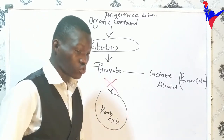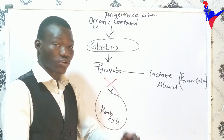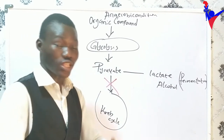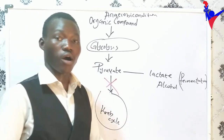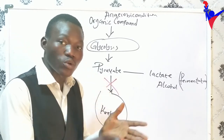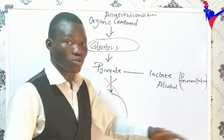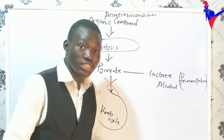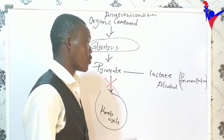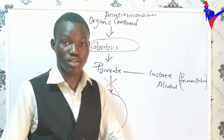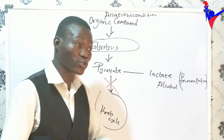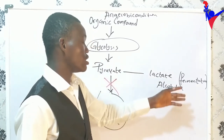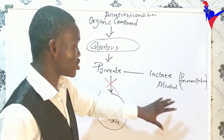For example, milk — if you leave milk without refrigerating it properly, it gets fermented and spoils. But scientists have been able to control the rate of fermentation, which is why we can now process milk to produce yogurt, cheese, and various fermented drinks. That process is called controlled fermentation. Organisms like yeast help facilitate this fermentation.